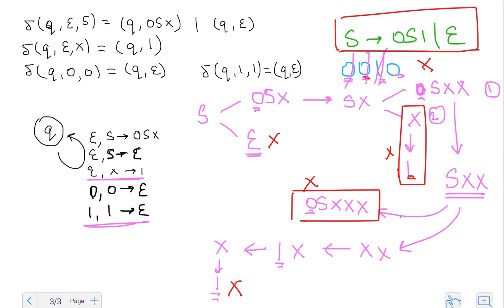Because this string did not belong to the grammar we had written, and we said this automaton corresponds to that grammar, it does not accept the string zero zero one zero. This is how I've shown you a run of the automaton for a couple of strings. I know this isn't a formal proof — my goal is to give you an intuitive understanding of converting a context-free grammar to a pushdown automaton and convincing you that the pushdown automaton does correspond to the grammar.